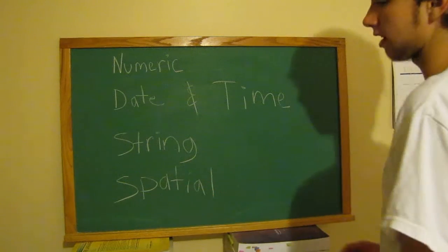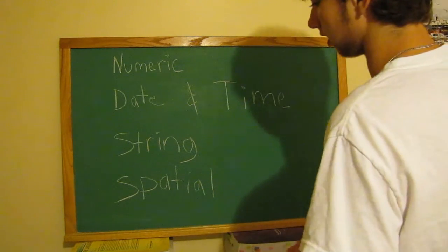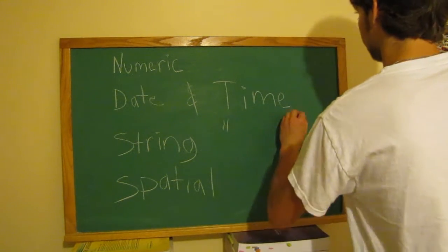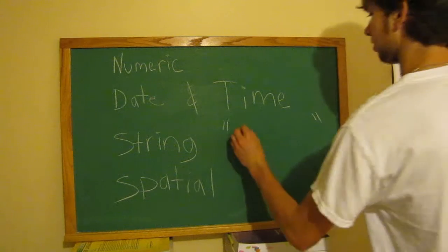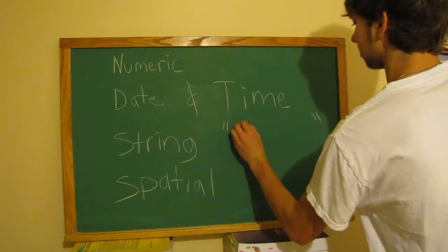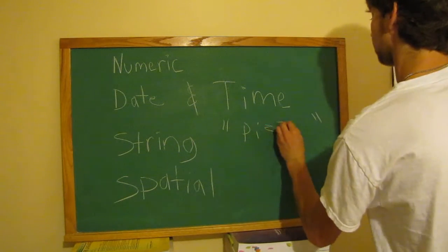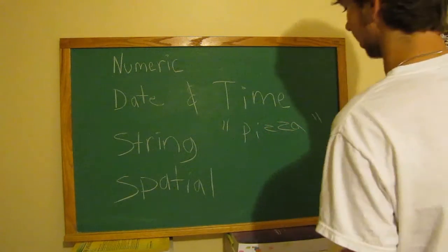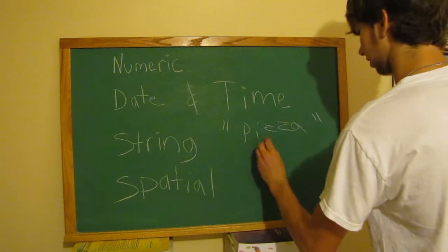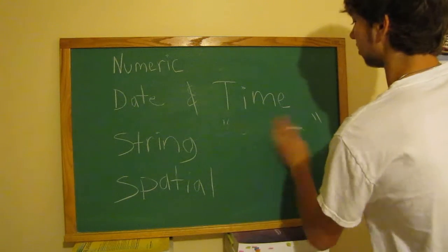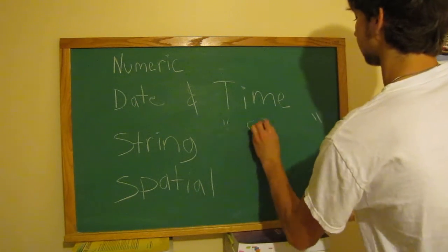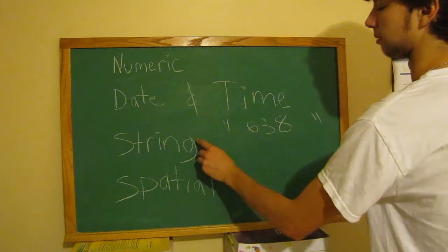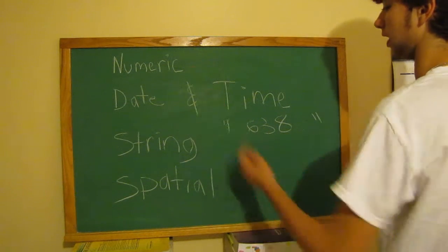String - that is any word or anything in quotes, like pizza. That's a string. You can also have numbers as strings, so you could have 638 in here, but this is still type string, not numeric.